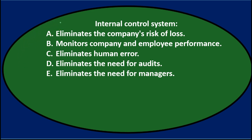We'll read through this one more time and see if we can cross things off with the process of elimination. If we think about what internal control systems do — they help us safeguard assets, comply with policies and procedures, and adhere to laws and regulations. A. Eliminate the company's risk of loss — the word 'eliminate' is very definitive. No internal control could eliminate the risk of loss; it might reduce it. So that word eliminate is disqualifying.